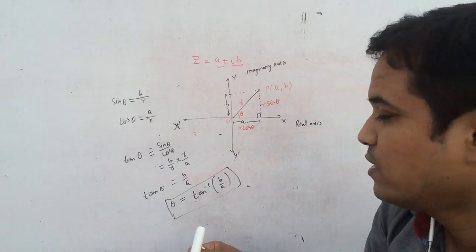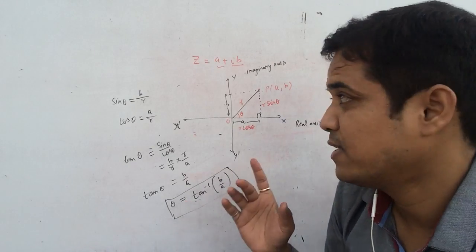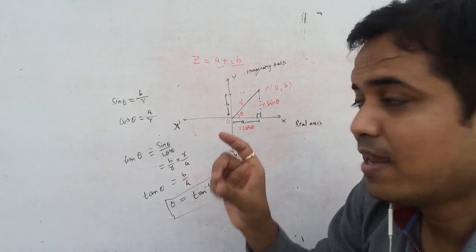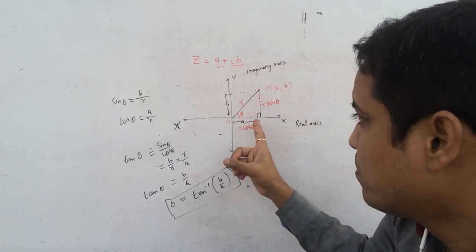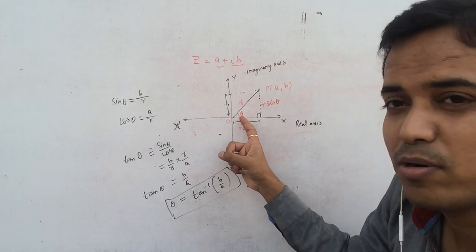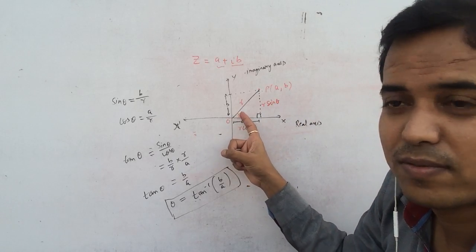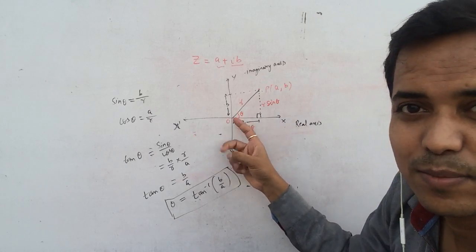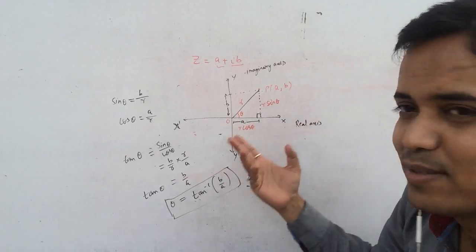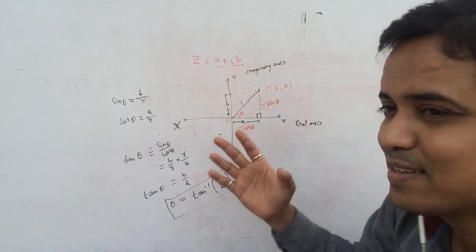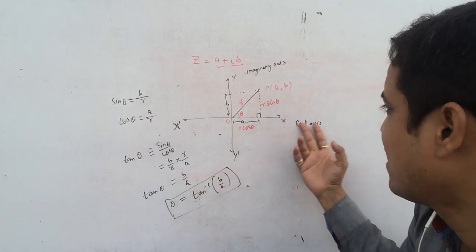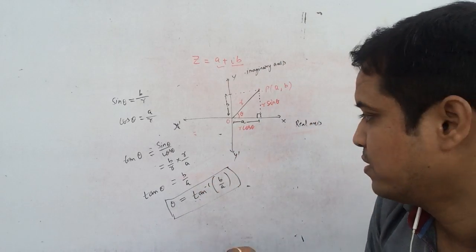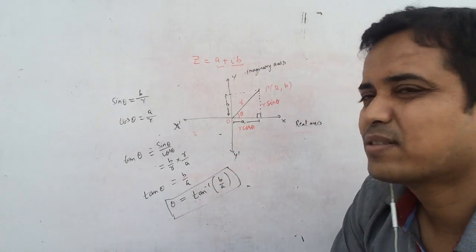So theta is the angle — I am repeating it again — theta is the angle formed by line OP with the positive direction of the real axis. This one is the real axis, and this one is the imaginary axis.